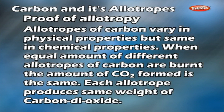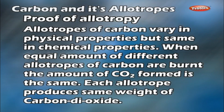Proof of allotropy: Allotropes of carbon vary in physical properties but are the same in chemical properties. When equal amounts of different allotropes of carbon are burnt, the amount of CO2 formed is the same — each allotrope produces the same weight of carbon dioxide.